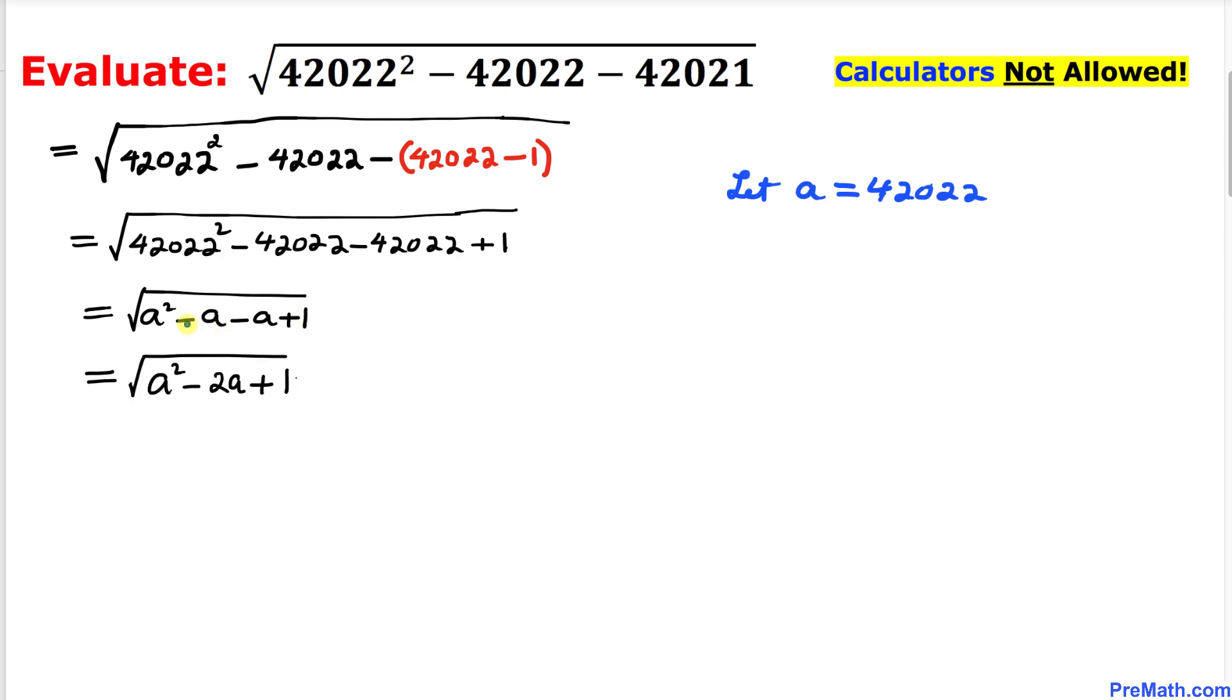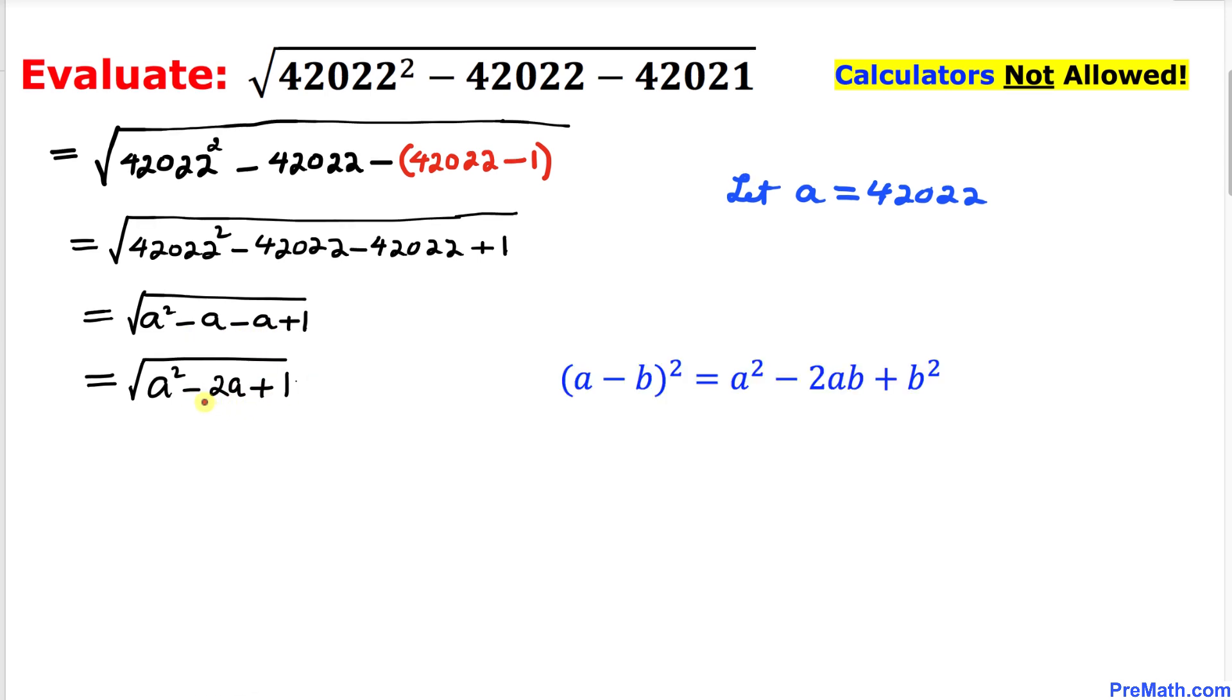Now in this next step, I have combined these like terms: negative a and negative a is going to give us negative 2a. And now in this next step, let's focus on this radicand: a squared minus 2a plus 1. And 1 could be written as 1 squared. Let's go ahead and compare this one to this formula.